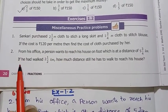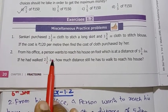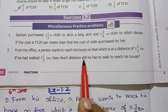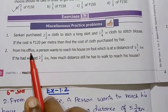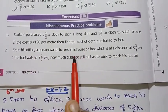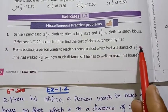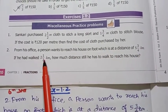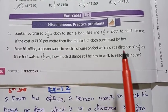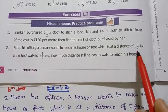If he walked 2 1/2 kilometer, how much distance still he has to walk to reach his house? So the person wants to reach his house from office. The distance is 5 3/4 kilometer, and he walked 2 1/2 kilometer to reach his house.